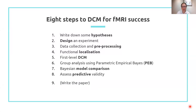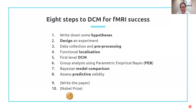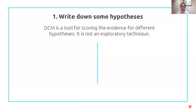Then number nine, you write the paper, and number ten, you collect your Nobel Prize. There may be a small gap of a few years between stages nine and ten. Let me now work through those ten steps and we'll go into a bit of detail — a lot of this will be recapping things that you've seen on the course.